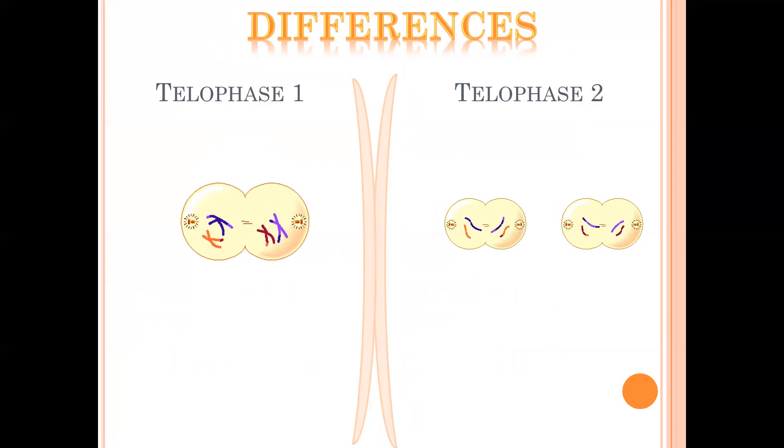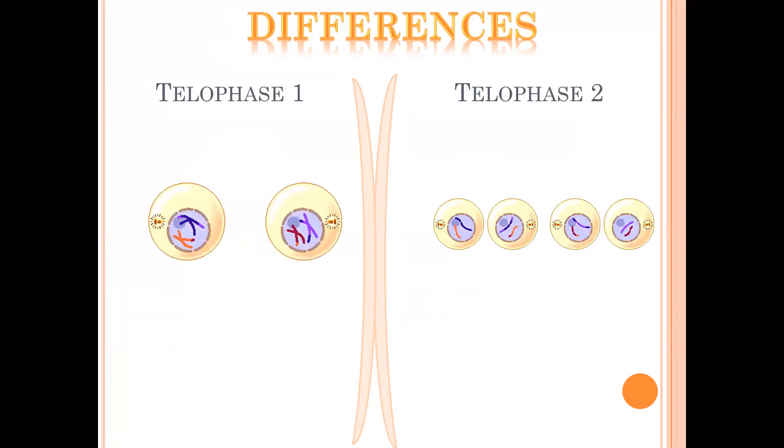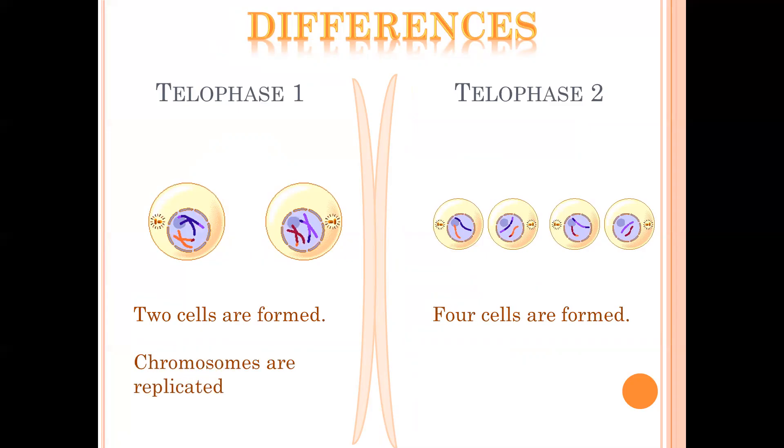But the differences: we notice that in telophase I you'd have two cells being formed, whereas at the end of telophase II we'd have four cells that have formed. In telophase I the chromosomes are replicated, whereas in telophase II you'd have unreplicated chromosomes.